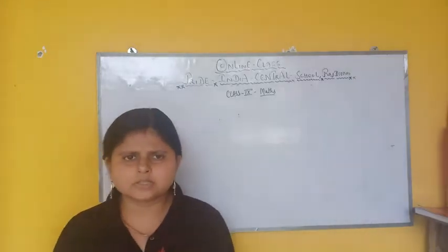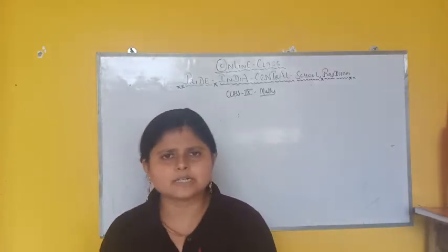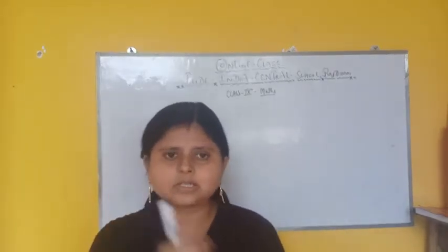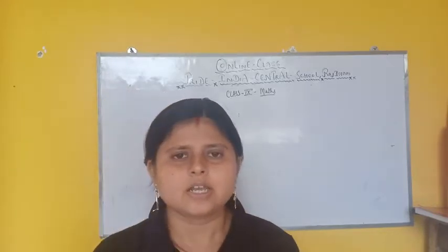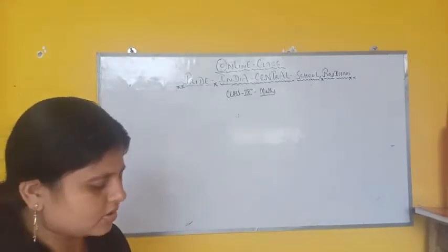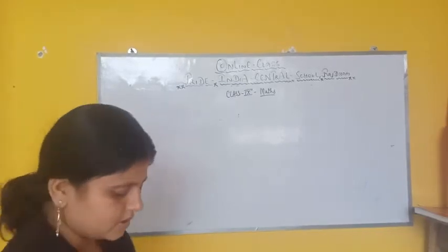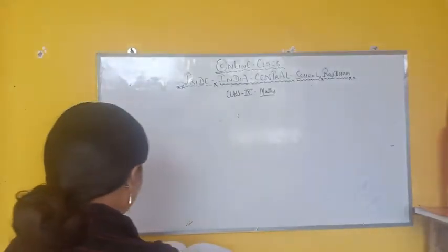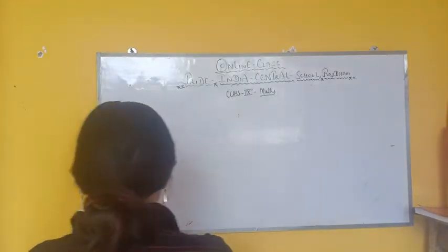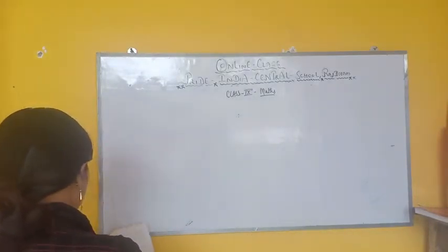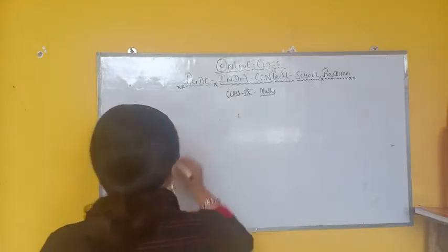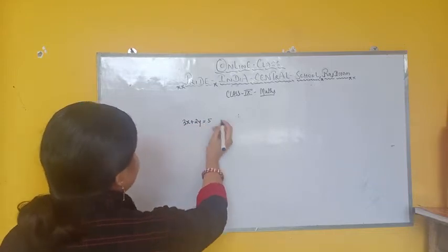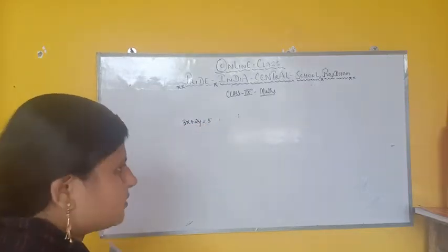Before moving further, since this whole chapter contains this topic only, I will go back a little from the start. We will once again review how to get the solution. Then we will discuss something related to the graph. Suppose we have one equation: 3x plus 2y is equal to 5.